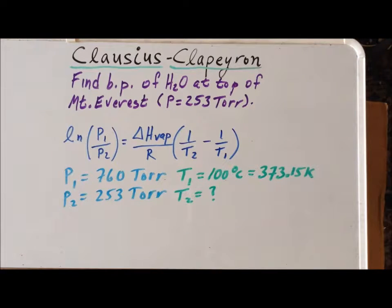Equivalently, it tells us that under that particular pressure, the vapor pressure of water will be 253 torr. Recall that the boiling point of a liquid is the temperature at which the vapor pressure of the liquid is now equal to the atmospheric pressure.